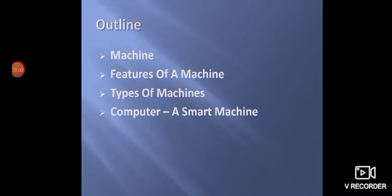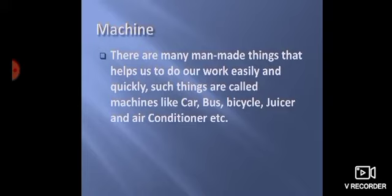So our first topic is machine. What is machine? There are many man-made things that help us to do our work easily and quickly. Such things are called machines like car, bus, bicycle, juicer, and air conditioner, etc.